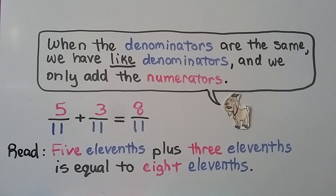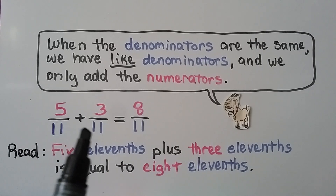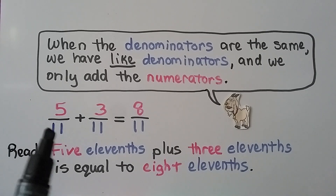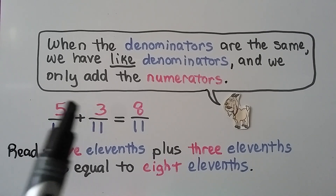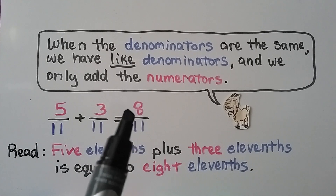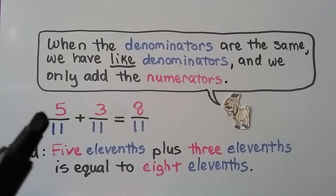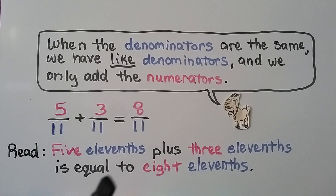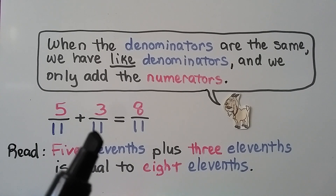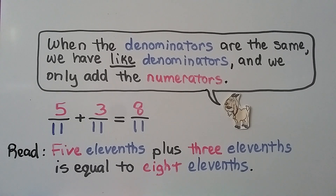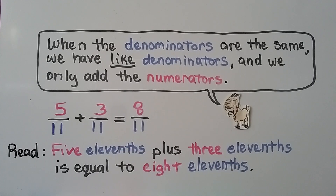When the denominators are the same, we have like denominators and we only add the numerators. Here the denominators are eleven, so we just add the numerators: five plus three is eight. We have eight-elevenths. Five-elevenths plus three-elevenths equals eight-elevenths.